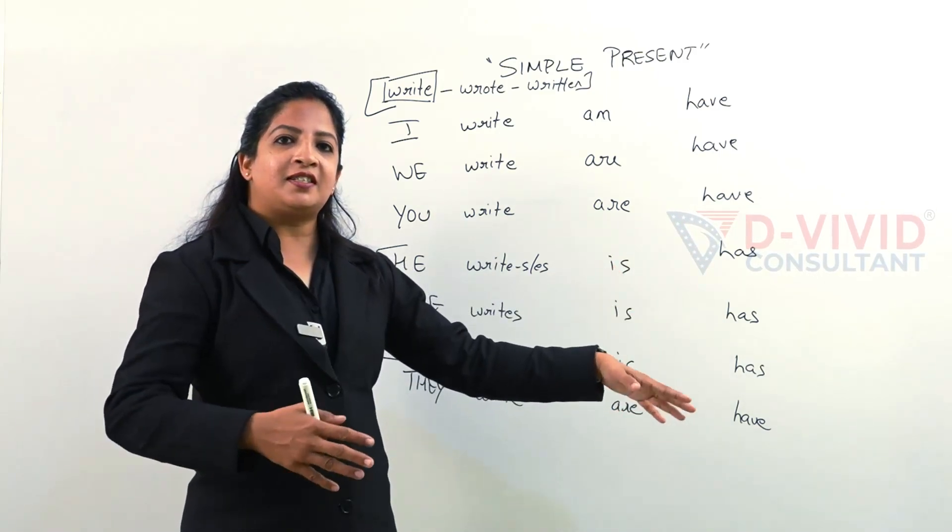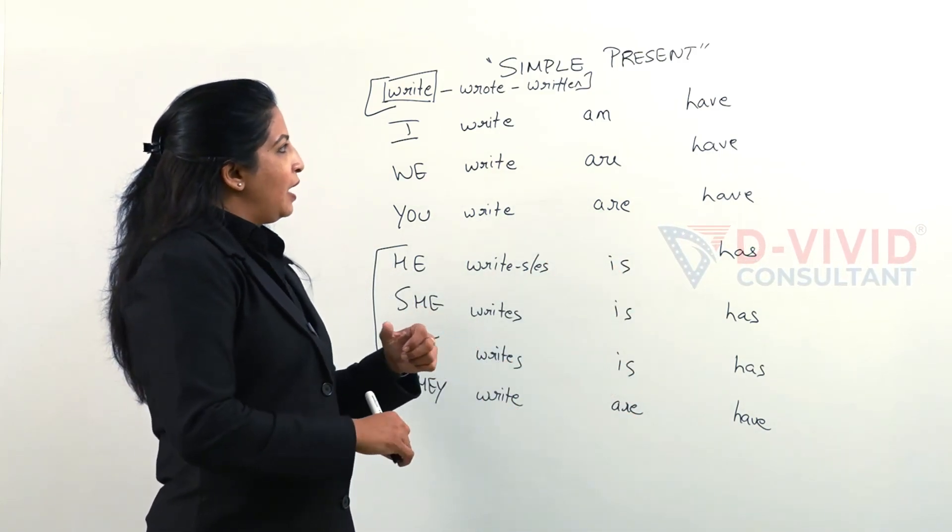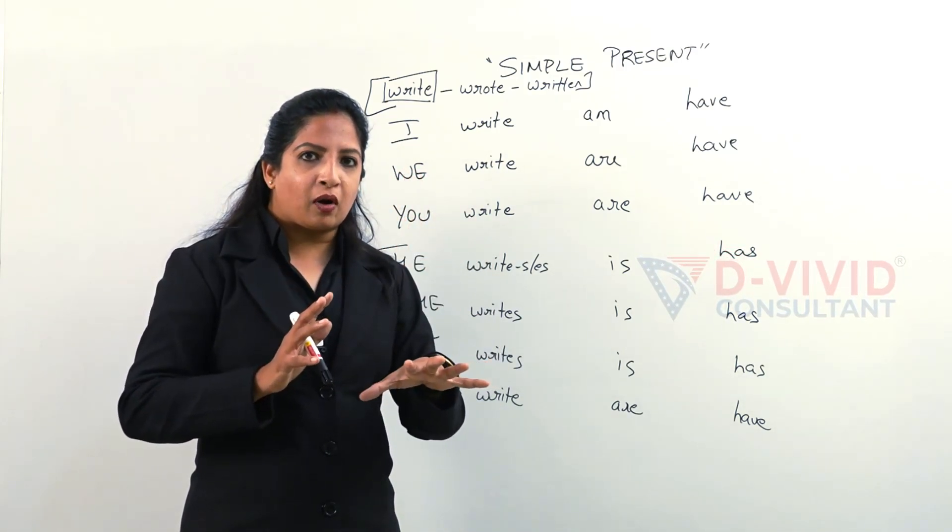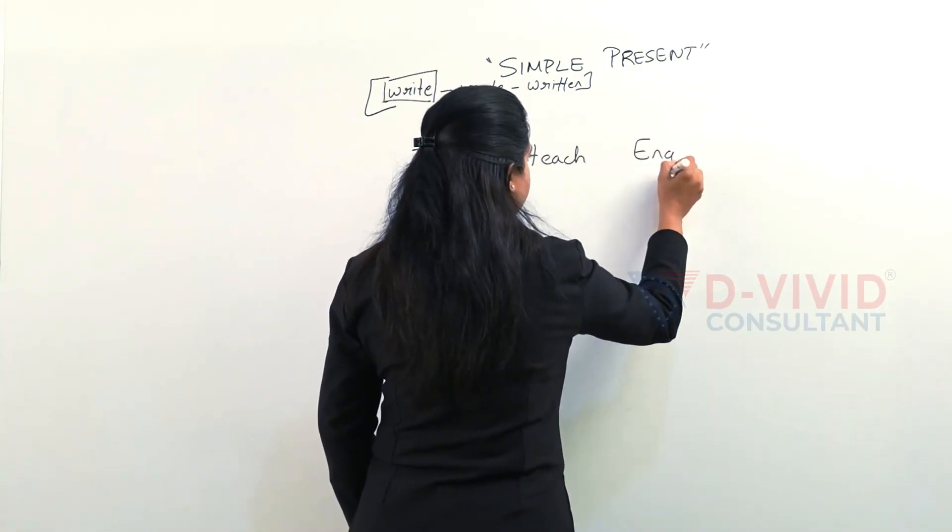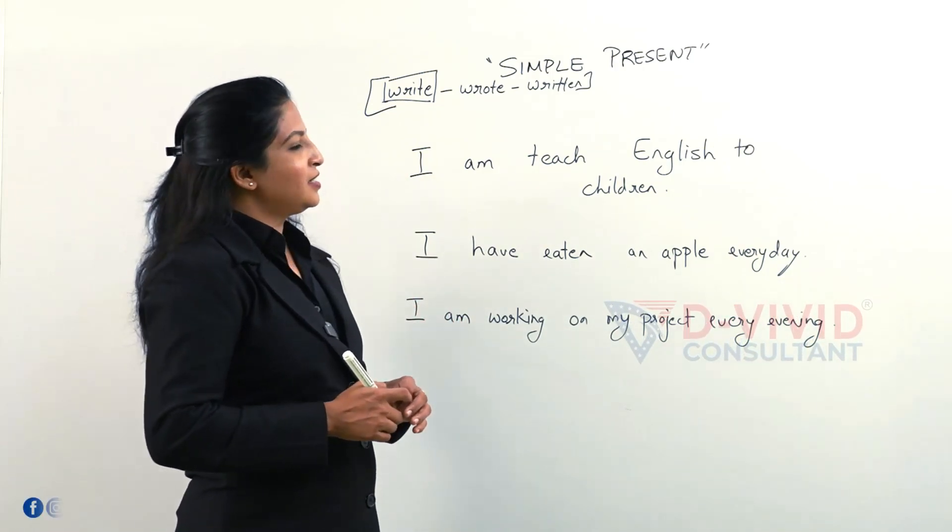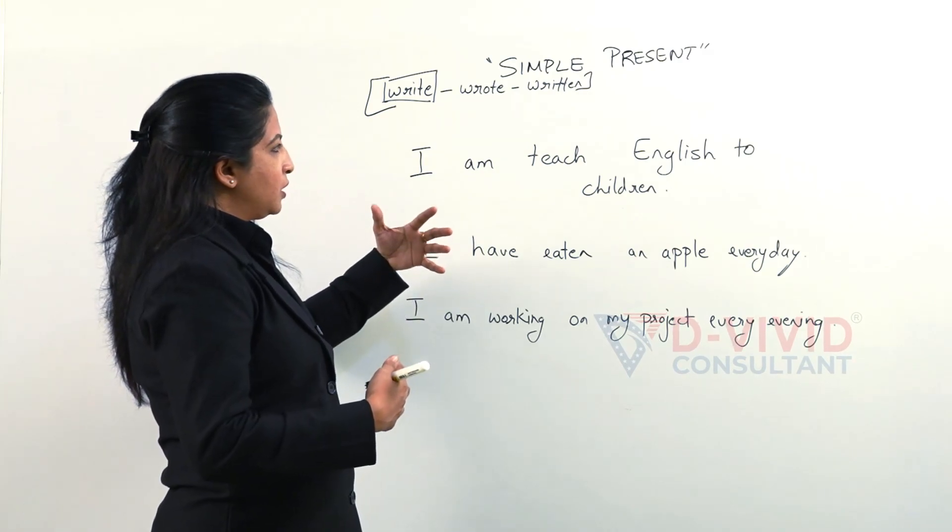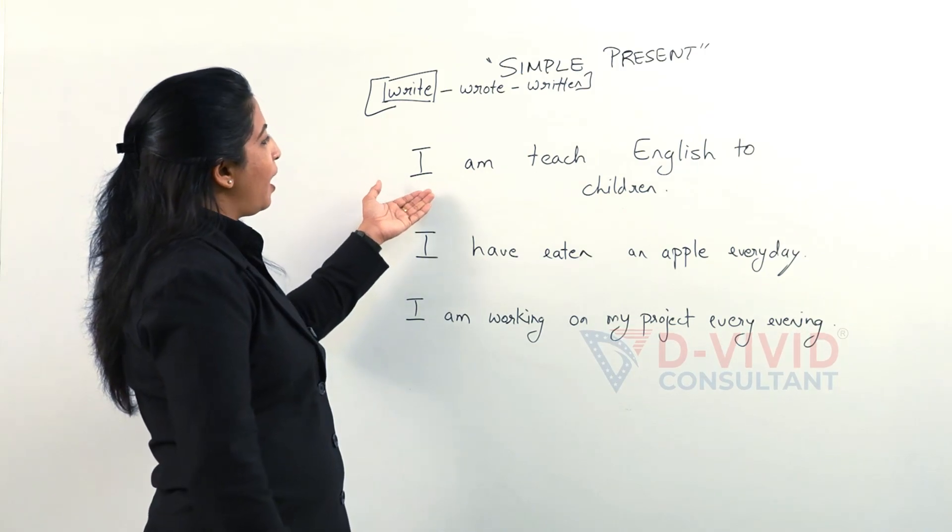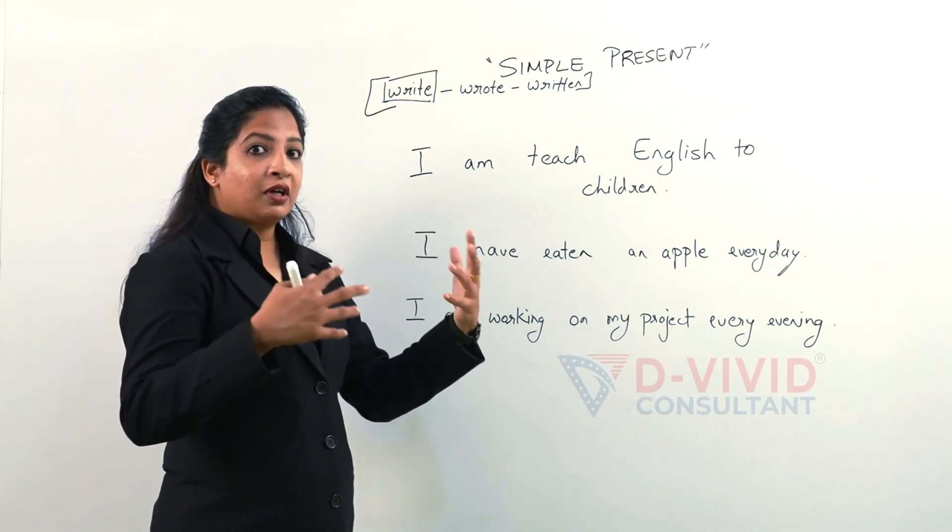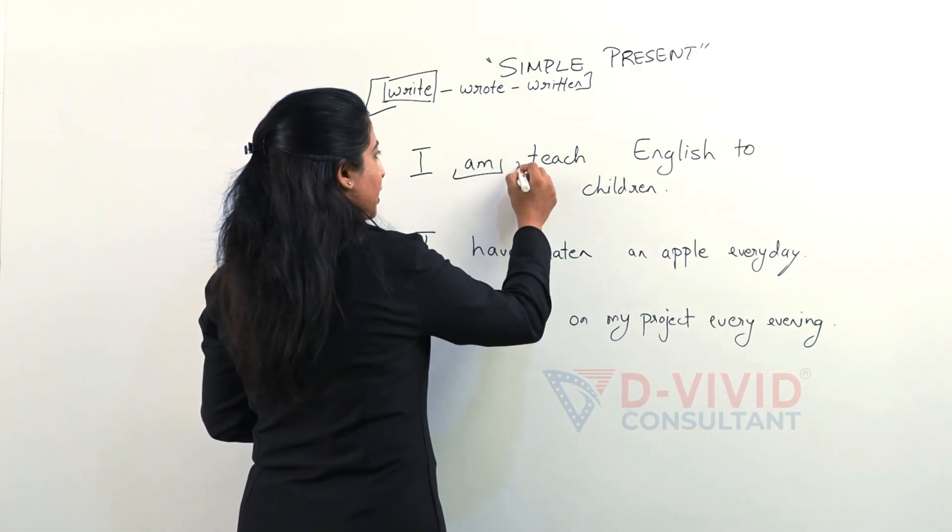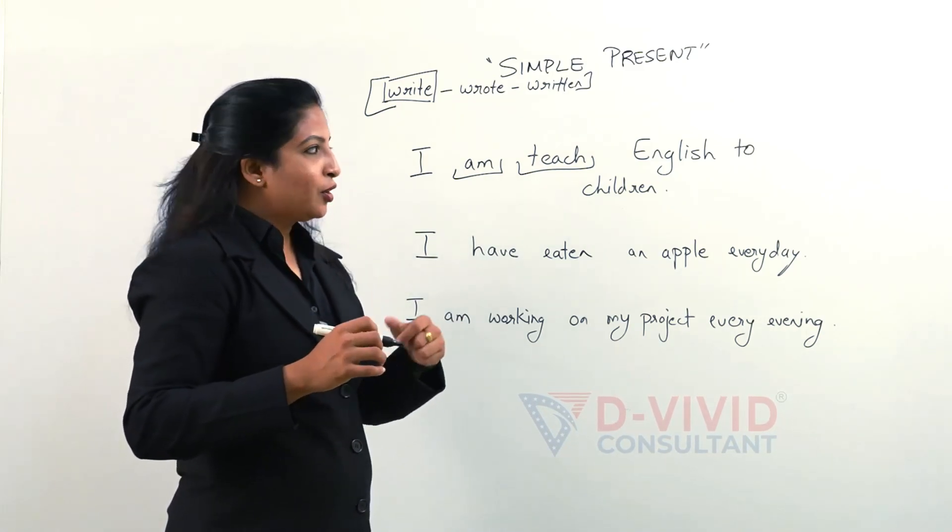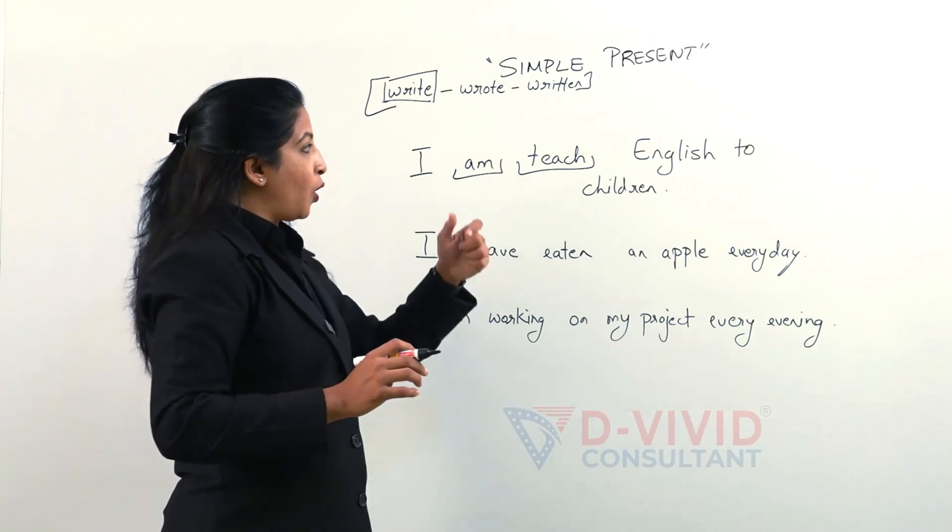Now this is a simple way of understanding the verb form of simple present tense. I would like to give you some kind of errors that generally people tend to make. This will help you to spot your error if you have made.